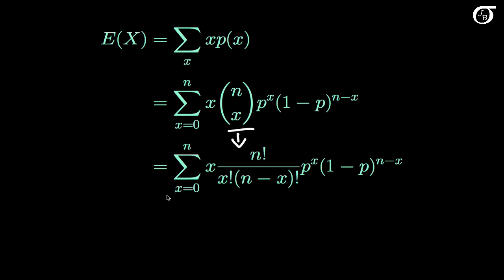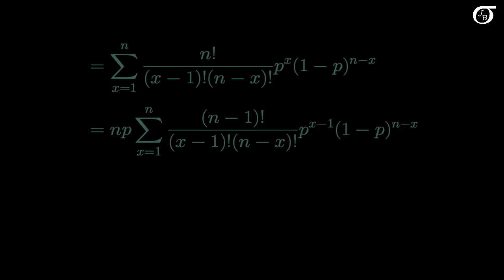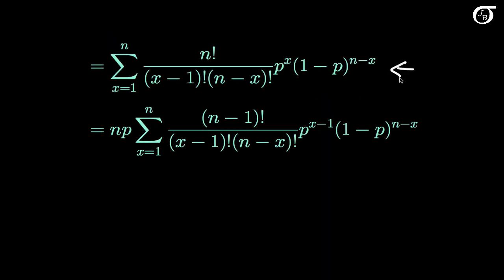So we can change this index to start at x equal to 1, because when x is equal to 0, this term is 0. Also note that x factorial is equal to x times (x-1) times all the way down to 2 times 1, or in other words, x times (x-1) factorial. So we can cancel this x with the first term and change x factorial to (x-1) factorial. Let's clean this up a little — we're left with this first line here.